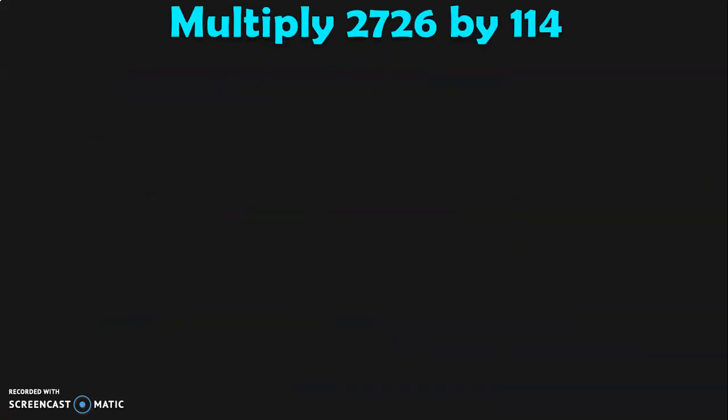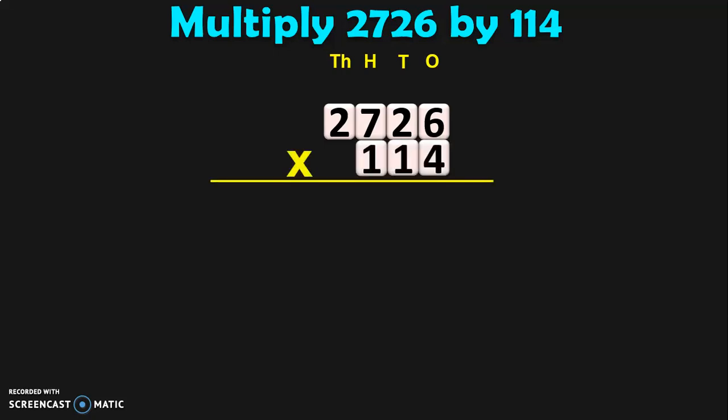Multiply 2726 by 140. The first step is always to write down the bigger number and its place values: 1s, 10s, 100s, and 1000s. Next, write down the number by which you are going to multiply, which is a 3-digit number in this case. You have to write it in the 1s, 10s, and 100s place. The next step is to begin the multiplication from the 1s place.